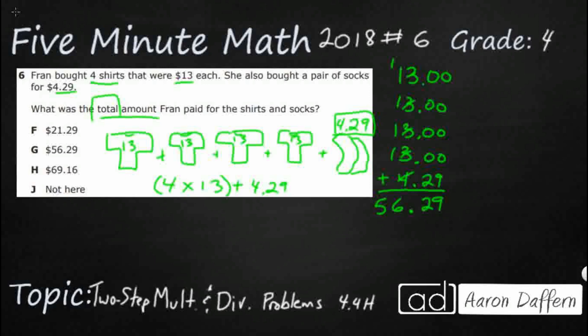But we also said we could do 4 times 13, then add $4.29. So let's do 13 times 4 using partial products. That means we multiply 4 times 3 and get 12, then 4 times 10, which is 40. Either way, you should get an answer of 52.